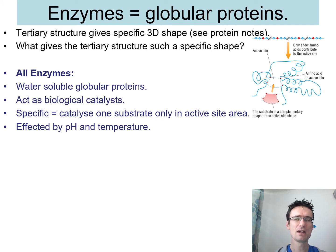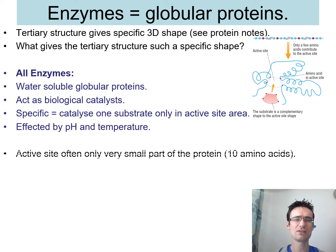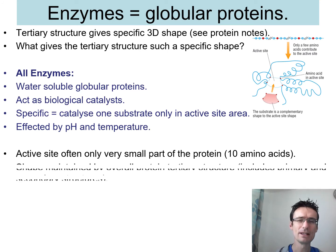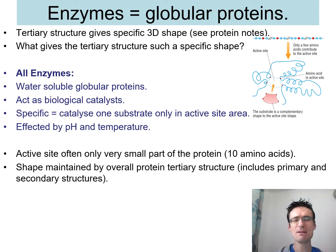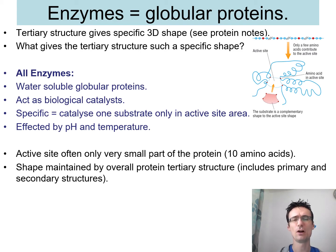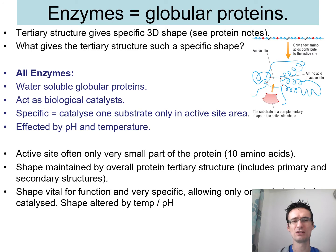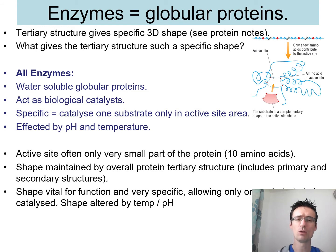Enzymes are specific, which we'll talk about as we go on. They are affected by pH and temperature, which I'll cover in the next few lessons. Their active site is a very small part of the protein — only about ten or so amino acids. Their shape is maintained overall by the tertiary structure, which obviously involves the primary and secondary structure too. Their shape is vital and very specific, so one enzyme works with one substrate. If pH and temperature go wrong, that affects it.